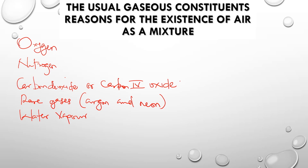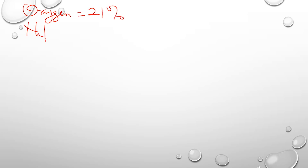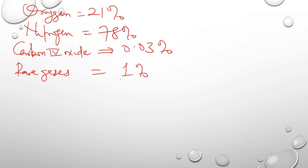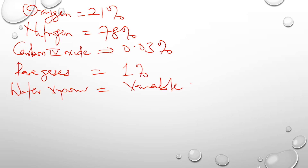Now the percentages: oxygen makes up 21% of air. Nitrogen makes up 78%. Carbon dioxide is 0.03%, very minute. Rare gases make up 1%. And water vapor? It varies — so it is a variable. These are the constituents of air: oxygen, nitrogen, carbon dioxide, rare gases, and water vapor.